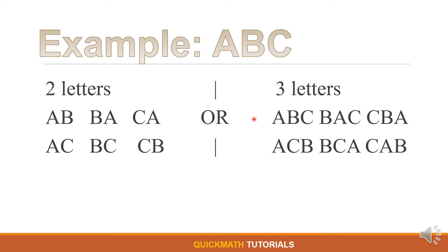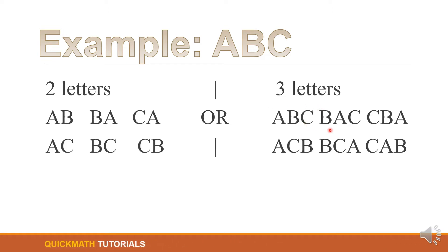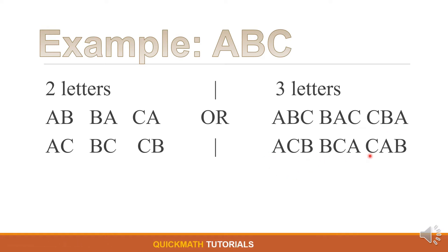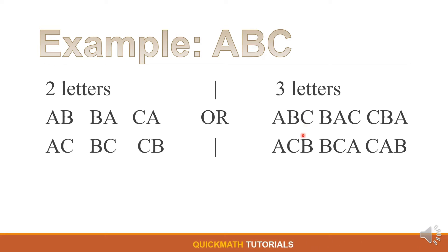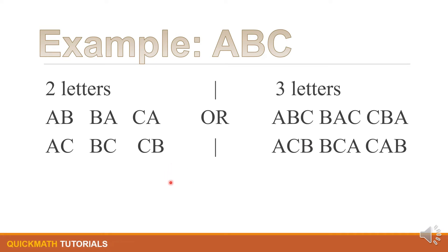And CB. So we have a total of six possible arrangements of its two letters. Or what if we will arrange all of its letters? We have ABC, BAC, BCA, ACB, BCA, and CAB. We also have a total of six possible arrangements of its three letters.